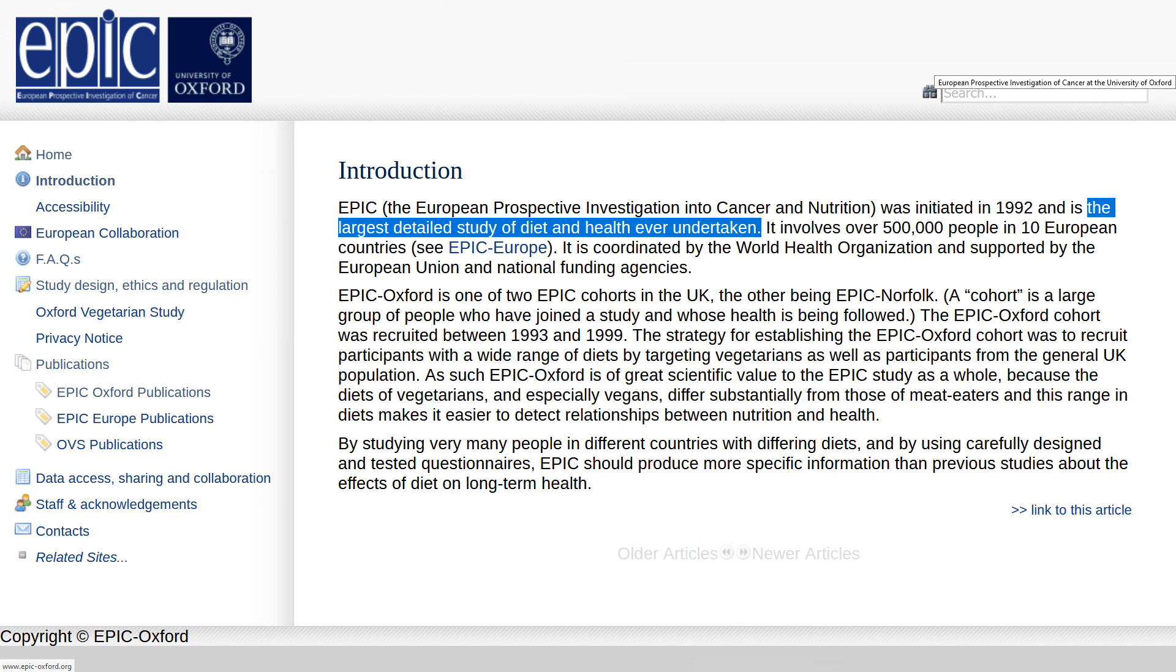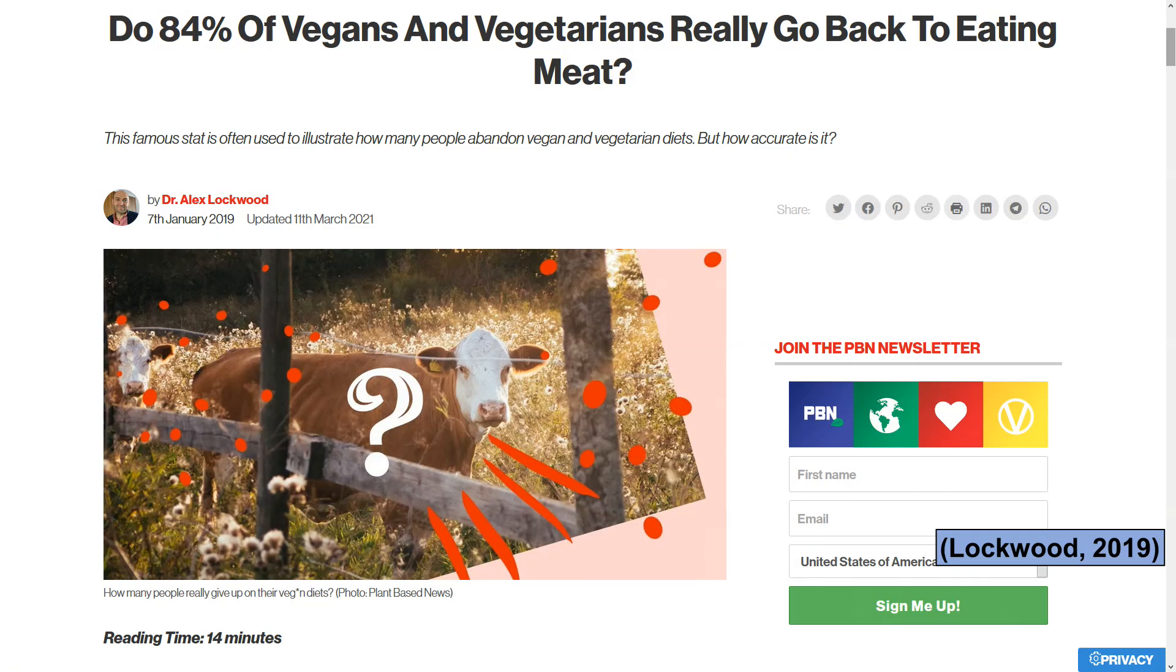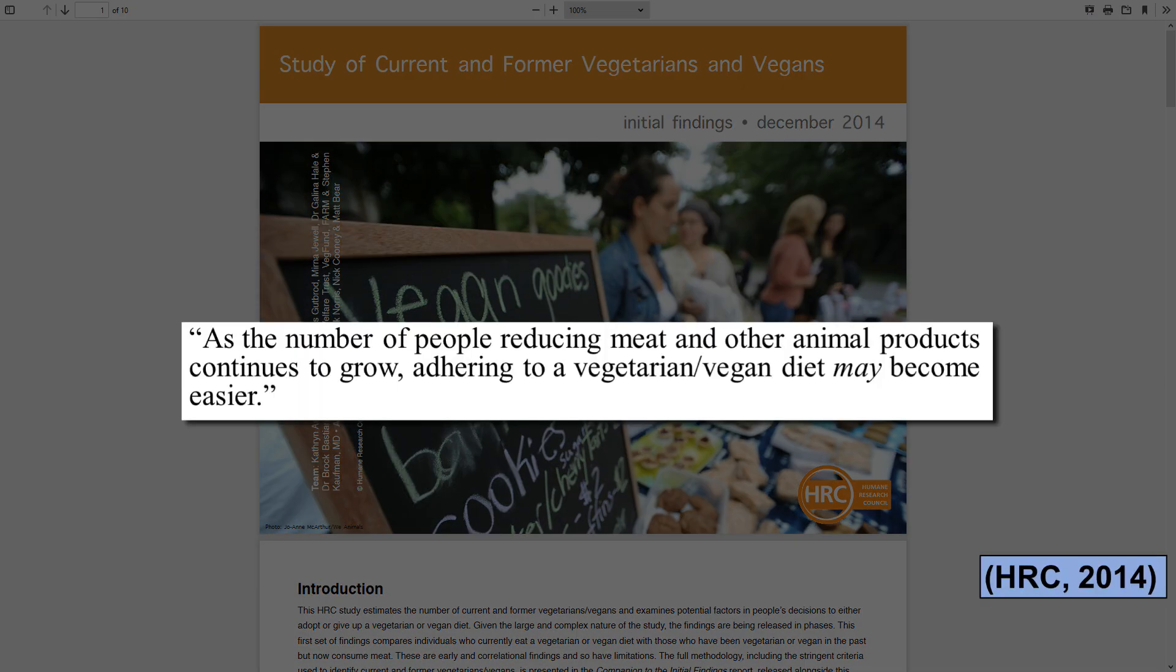So first of all this 84% figure whilst interesting comes from just one study and other studies give a very different picture of recidivism rates. For example data from the EPIC Oxford study shows that 73 percent of people who identified as vegetarian or vegan in the 90s were still adhering to those lifestyles more than 20 years later. In other words only 27 percent quit rather than 84 percent. But the study which the 84% figure comes from is still an important data point and certainly worth exploring. However if Dr. Mitt had actually read the original study, he'd know that nutrient deficiencies were not found to be a significant cause of recidivism. The authors actually determined that the primary reasons people quit were inconvenience and social pressure.